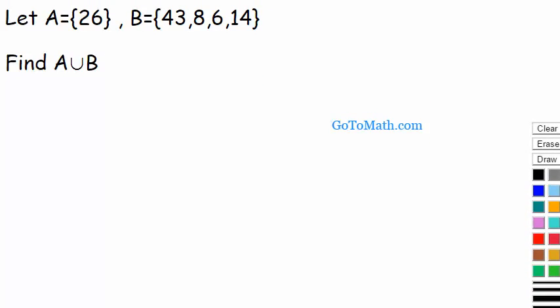So we have an operation here. This is the union operation and what union means is you just join both A and B together. So let's write this out. Let's use that color there.